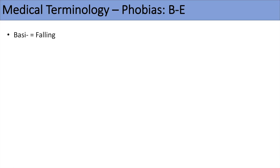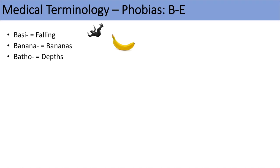The next set of phobias start with the letters B to E. The first is basi or baso, meaning falling, so basophobia would mean a fear of falling. The next one is banana — bananaphobia — which, as strange as it sounds, is a fear of bananas. Some people do have this phobia. The next one is batho, meaning depths, so bathophobia is a fear of depths.